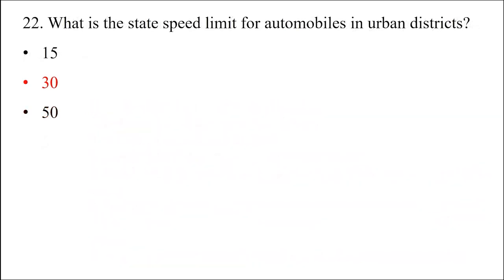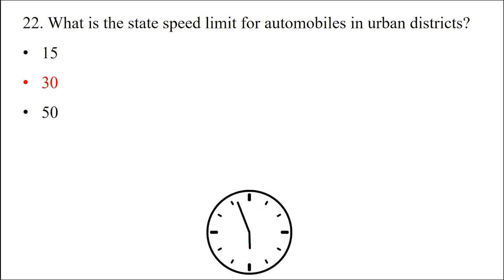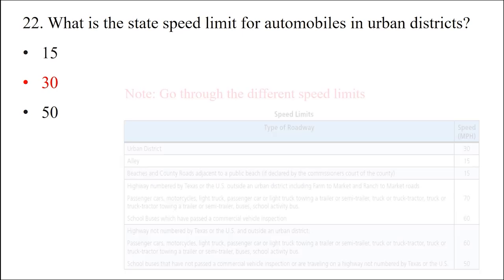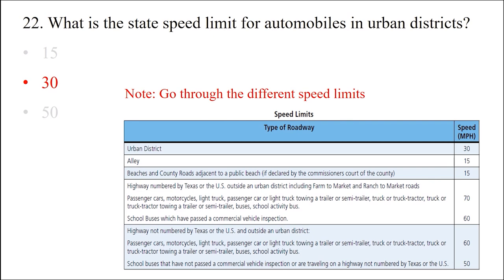Question: What is the state speed limit for automobiles in urban districts? Option 1: 15 miles per hour. Option 2: 30 miles per hour. Option 3: 50 miles per hour. The answer is option 2: 30 miles per hour. Go through the different speed limits for various road types.